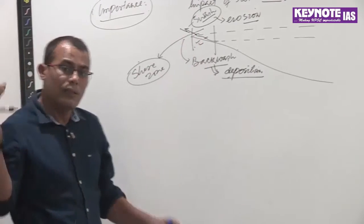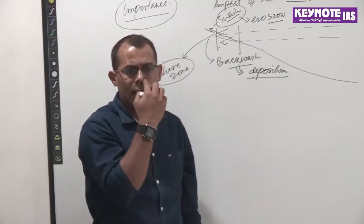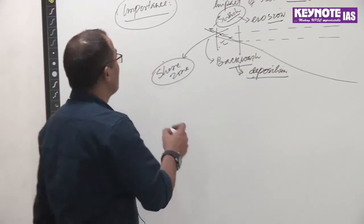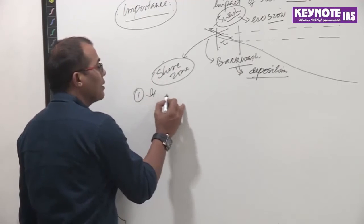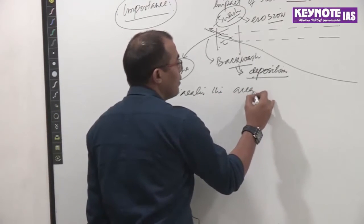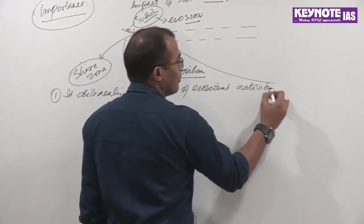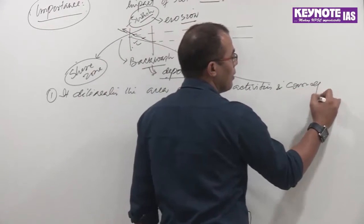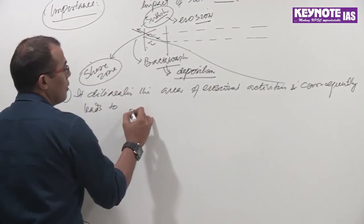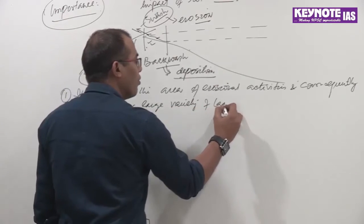In this shore zone, the wave will hit the coastal areas and gradually cut them down. The significance is that tides delineate the area of erosional activities and consequently lead to a large variety of coastal landforms.